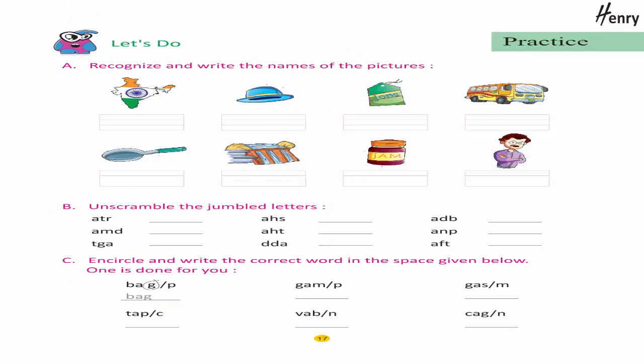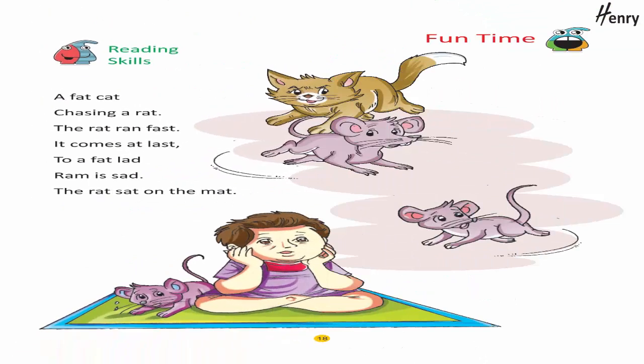Practice: let's do. Recognize and write the names of the pictures. Unscramble the jumbled letters. Encircle and write the correct word in the space given below. One is done for you. Fun time.